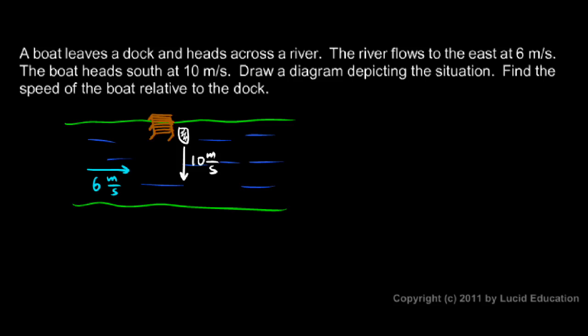Now, we're told to find the speed of the boat relative to the dock. Well, the speed of the boat relative to the dock is going to be the speed of the boat relative to the water plus the speed of the water relative to the dock. And both of those speeds are really vectors. We have to take the direction into account. So, we have to add these two vectors.